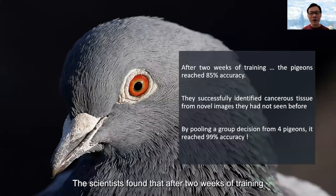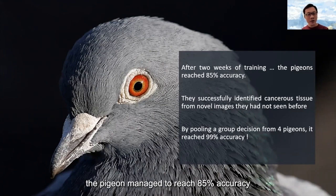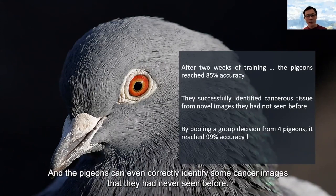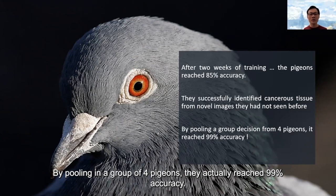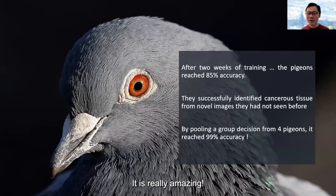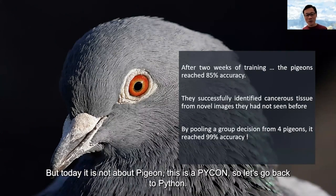The scientists found that after two weeks of training, the pigeon managed to reach 85% accuracy, and the pigeon could correctly identify cancer images it had never seen before. By pooling a group of four pigeons, they actually reached 99% accuracy. It's really amazing. But today it's not about pigeons — it's about PyCon, so let's go back to Python.